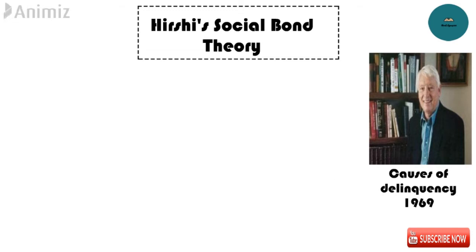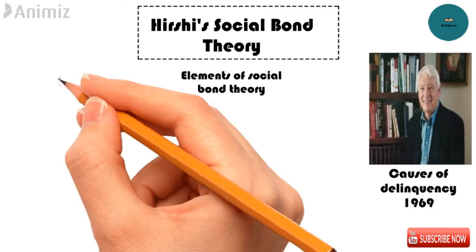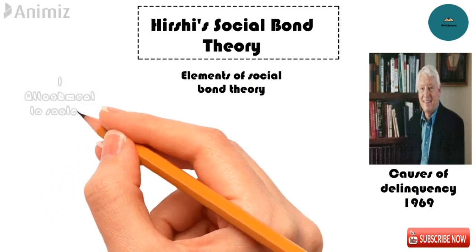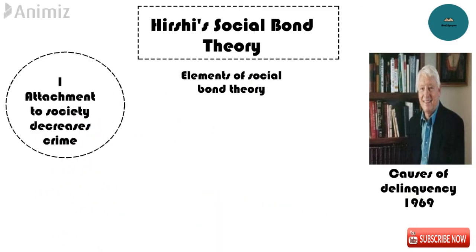Travis Hirschi defined different elements of Social Bond Theory. The first element is attachment. Attachment with family, friends, community, and teachers restrains a person from committing crimes and deviant behaviors. Without attachment to parents, peers, and schools, a person cannot adapt to the norms of society and may live the life of a psychopath. Detachment to social institutions is a predictor of delinquent conduct.